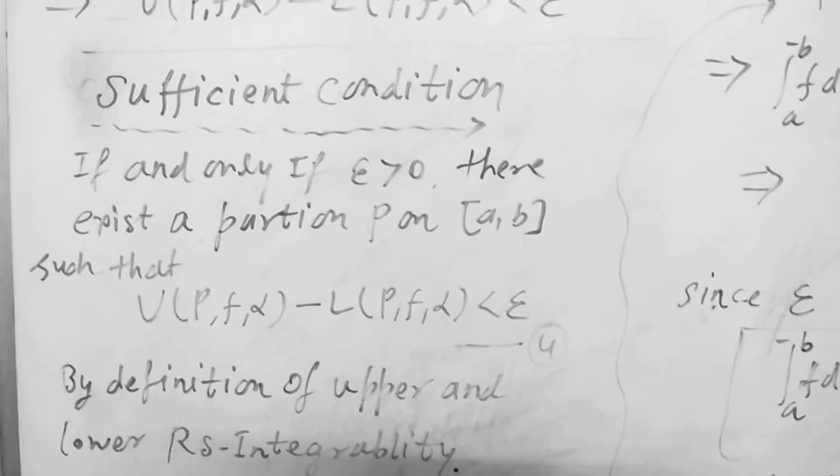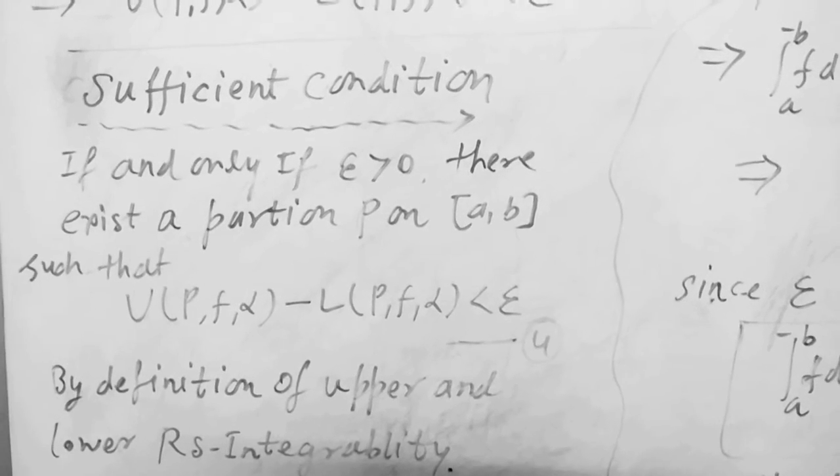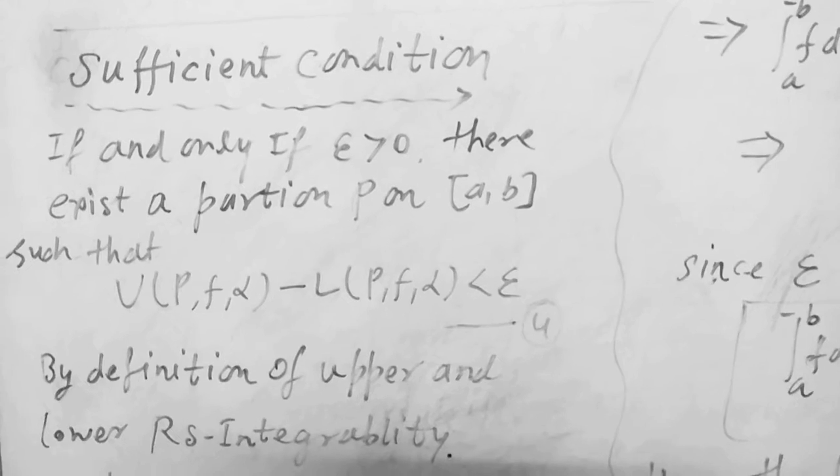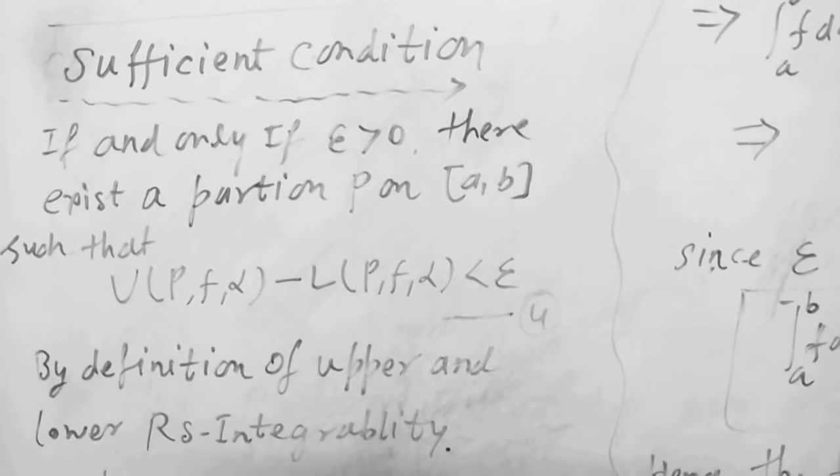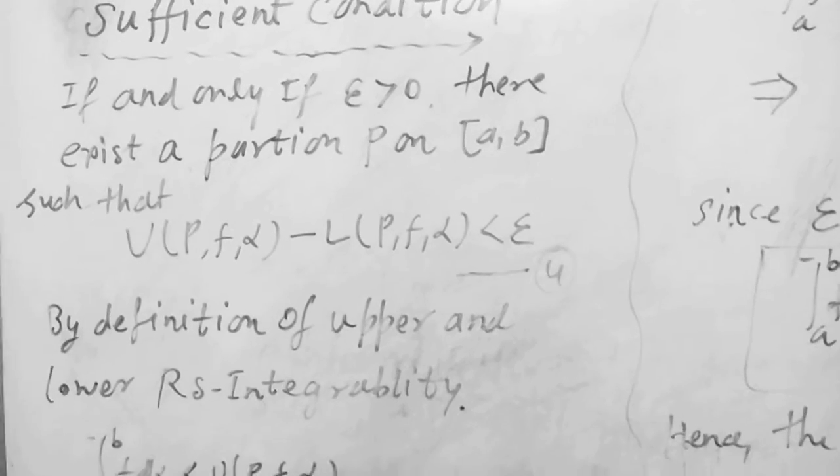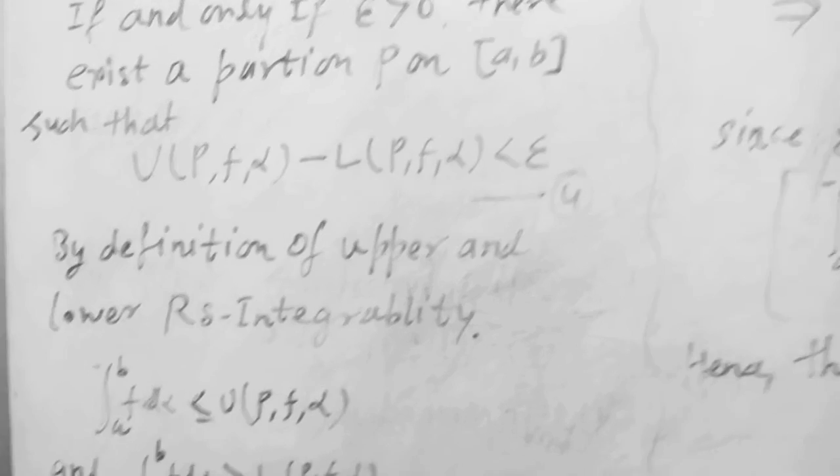And sufficient condition: if and only if for every ε > 0 there exists a partition P on [a,b] such that U(P,f,α) - L(P,f,α) < ε. This is equation 4. By definition of upper and lower RS integrability...